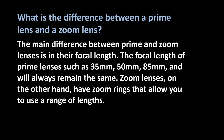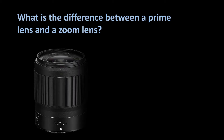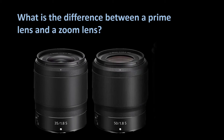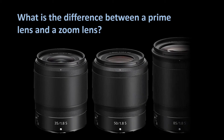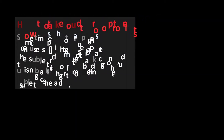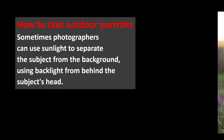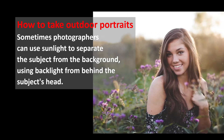What is the difference between a prime lens and a zoom lens? The main difference is in their focal length. The focal length of prime lenses — such as 35mm, 50mm, and 85mm — will always remain the same. Sometimes photographers can use sunlight to separate the subject from the background using backlight from behind the subject.